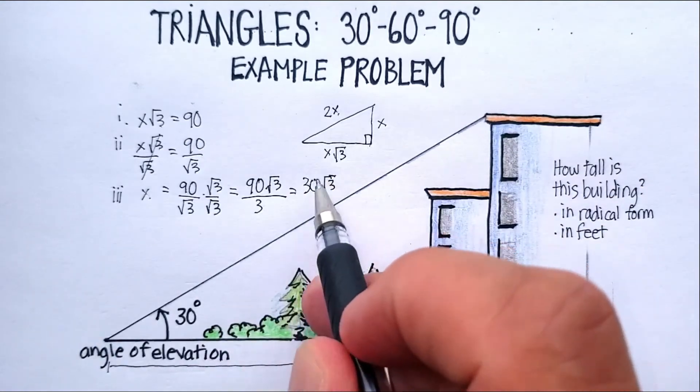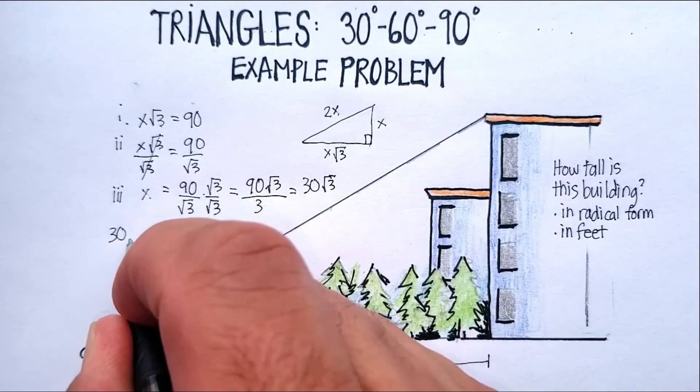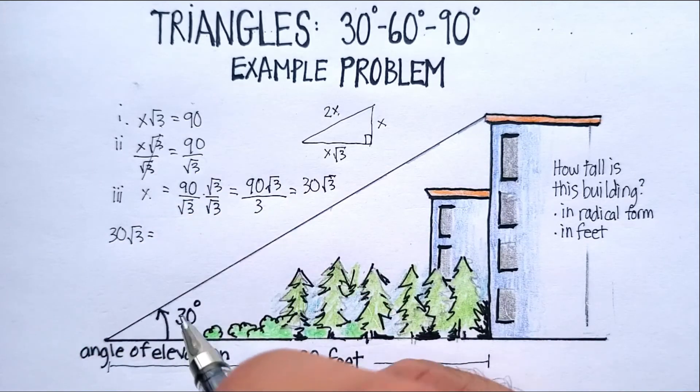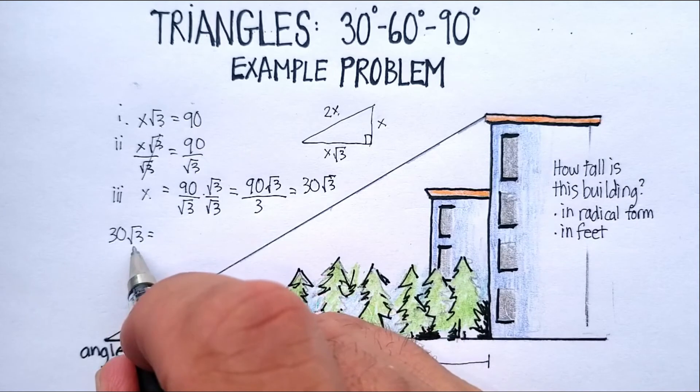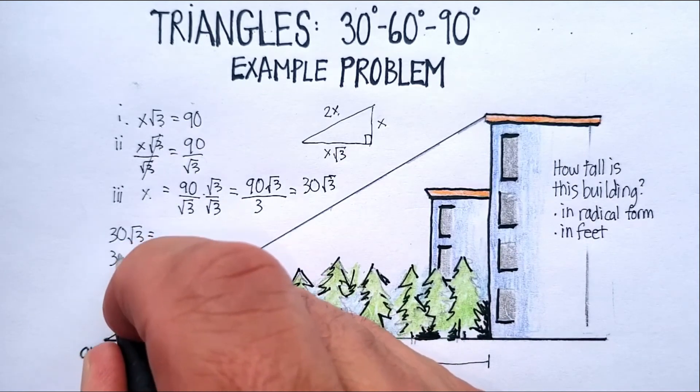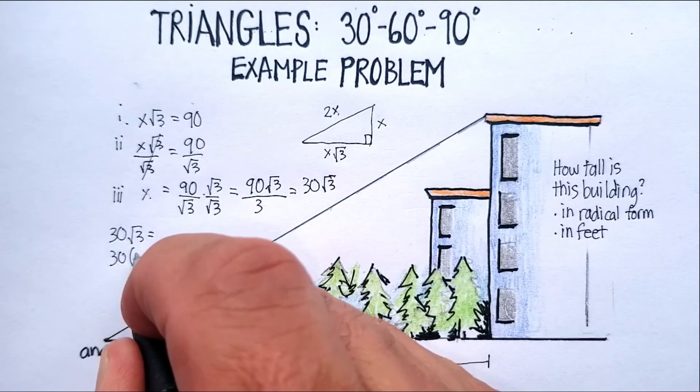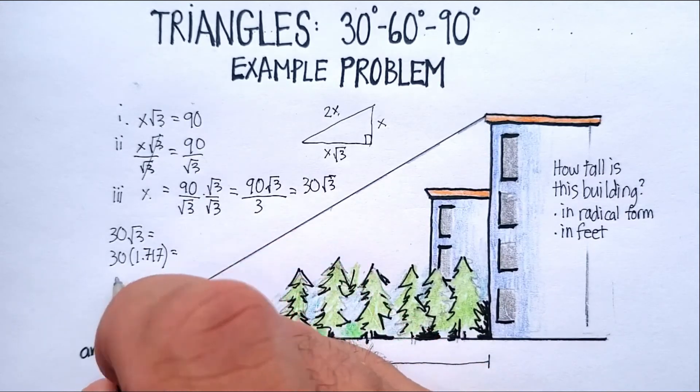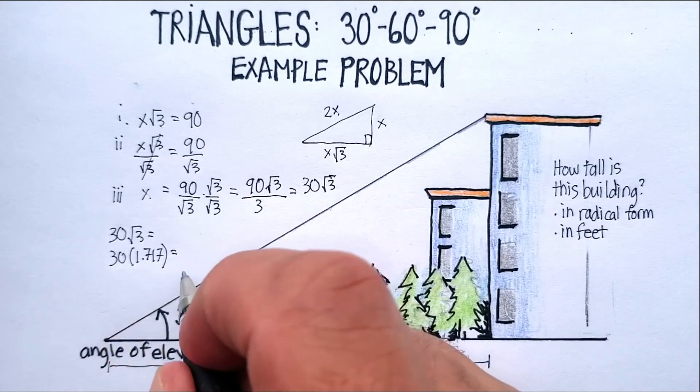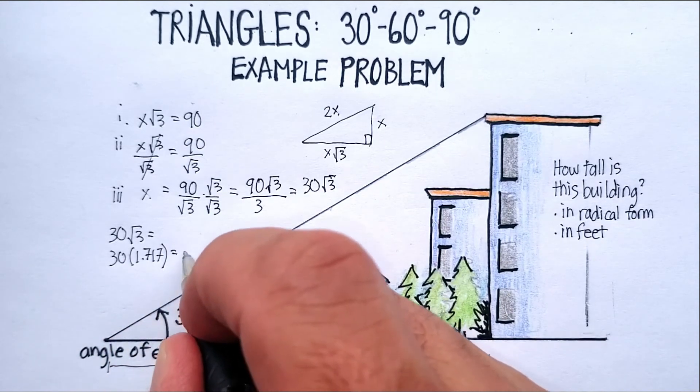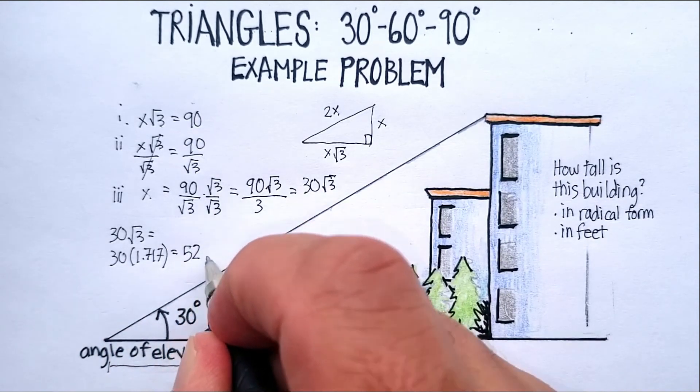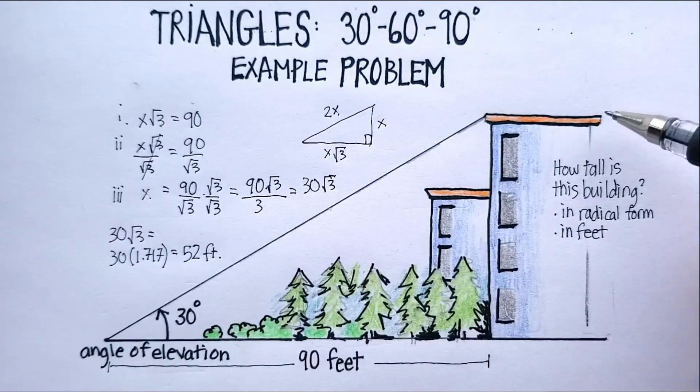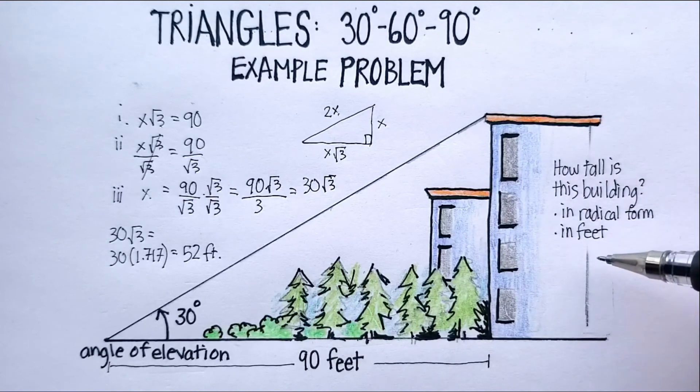Now to convert this, we're going to take 30√3 and we're going to multiply that in our calculators. Now I also know that √3 is 1.717. And that's going to end up with approximately 52 feet tall. And that would be my answer here. The building is about 52 feet tall.